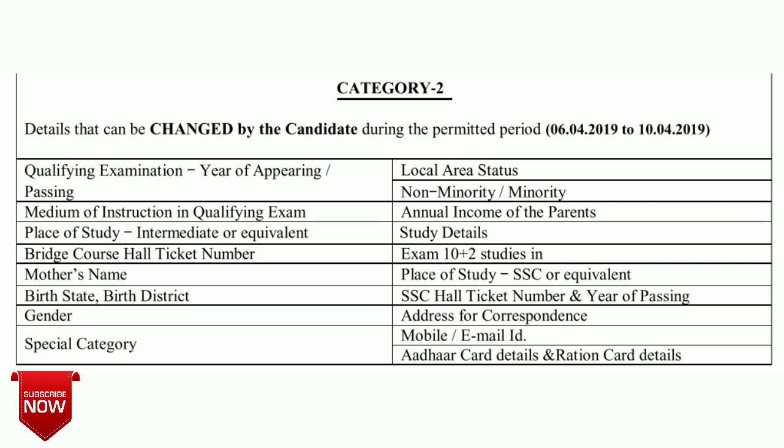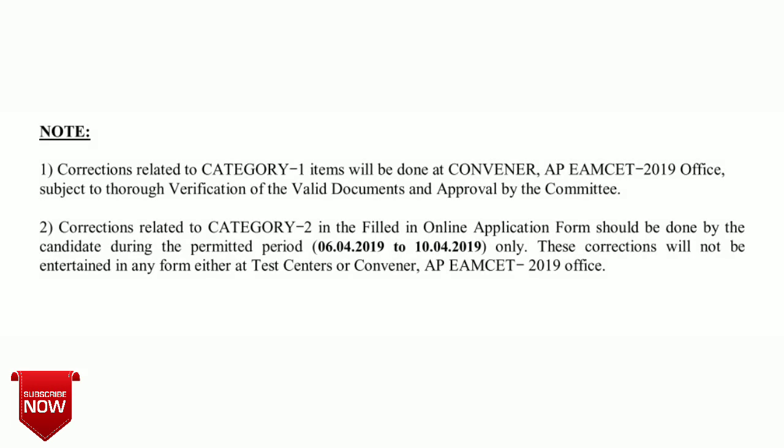These are the details which can be changed by yourself from 6th April to 10th April. As a note: for corrections related to Category 1, these items will be done at the convenor level only — you need valid documents and approval from the convenor for those corrections. For Category 2, you can change it yourself between 6th April and 10th April without going to the convenor.